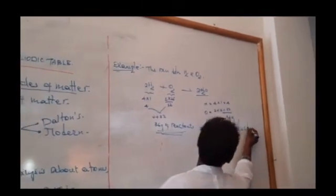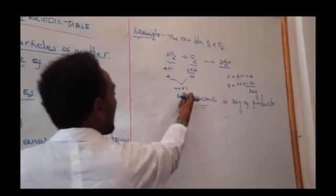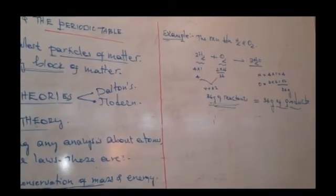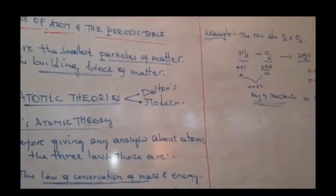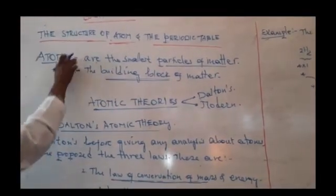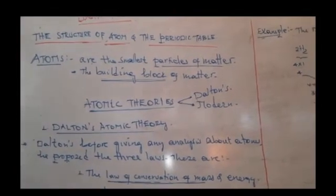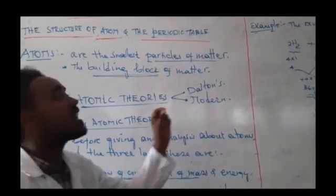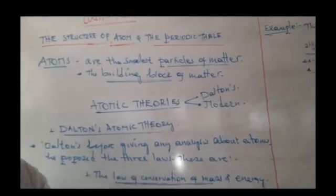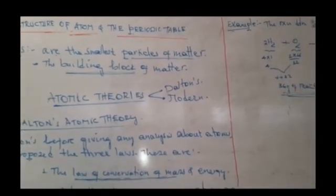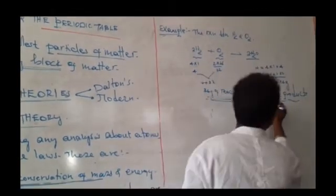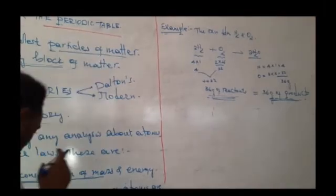So thirty-six grams of reactants equals thirty-six grams of products. This law simply works because the mass of the reactant and the mass of the product are equal — mass is neither created nor destroyed. In the case of Dalton's atomic theory, before giving postulates or ideas about atoms, he explained these three laws, which are very important to identify the ideas or postulates. Based on that, we can prove that the mass of atoms are neither created nor destroyed — the mass of the reactant equals the mass of the product.